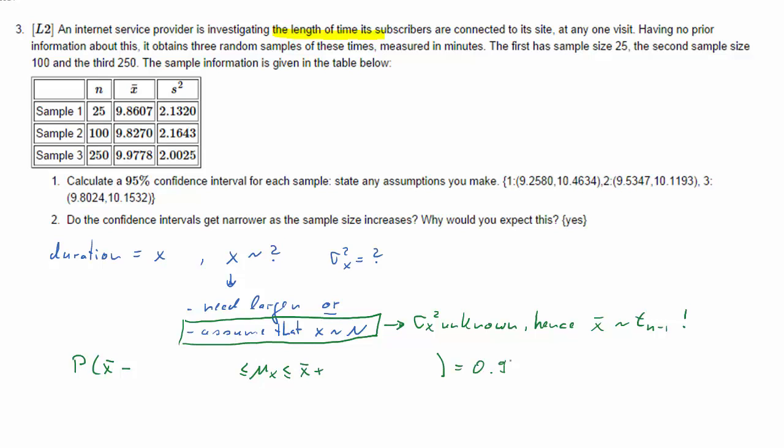Mu X, the true mean of X, and we have a lower and upper bound which is centered around X bar. And we're subtracting and adding a term which is a product of a value from the t distribution in this case, times the standard deviation of X bar. So this is what we call the lower bound.